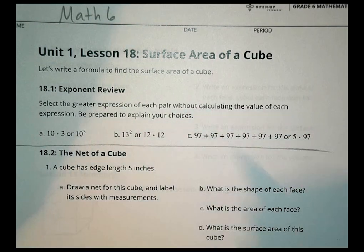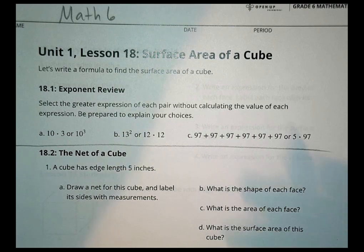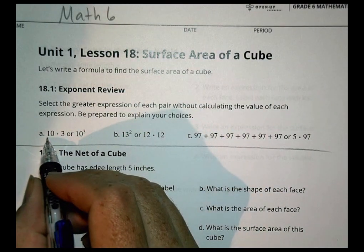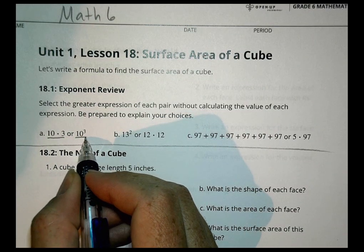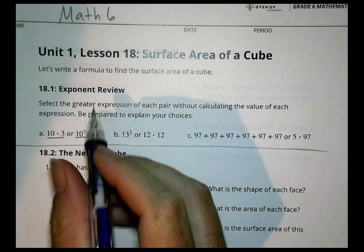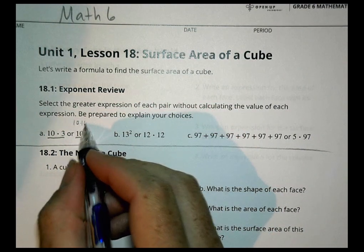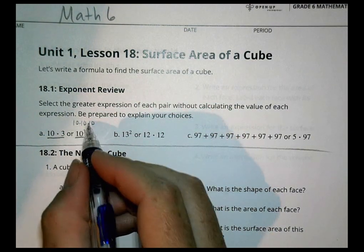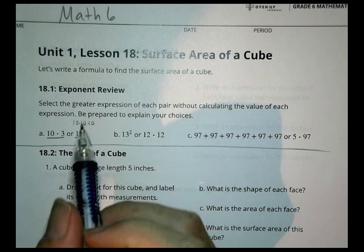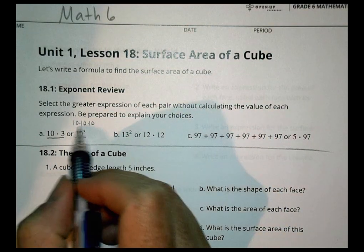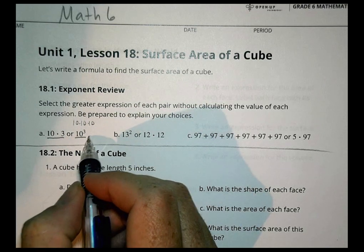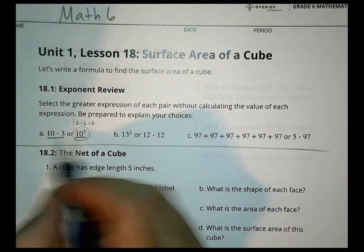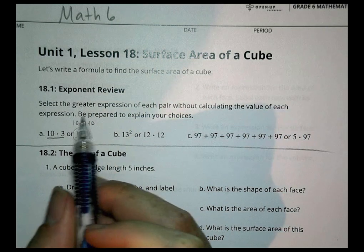Looking at these, decide which one is the larger value without calculating. For A, we notice this is 10 times 3, and over here we have 10 to the third power. 10 to the third power means 10 times 10 times 10. So when I multiply 10 by itself three times, I end up with a bigger number than 10 times 3 — and by a little bit, we mean a lot.